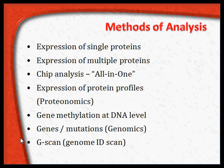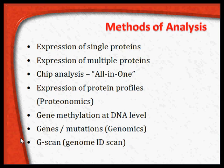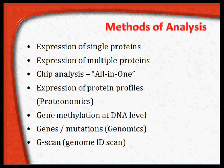Depending on the gene methylation level, we can prognosticate a particular patient. Gene identification and gene mutations are studied as genomics. Also, genome mapping or genome ID scan — called G scan — scans the whole genome of the patient. These are some of the modern, sophisticated techniques used to analyze tumor markers.